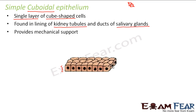Why are they present in kidney tubules and salivary glands? There has to be a reason. This kind of epithelium helps in absorption as well as secretion. When I talk of secretion, I am talking about salivary glands — the glands that secrete saliva. When I talk of absorption, you can think of kidney tubules, which help in absorption and transportation of substances filtered by the kidney. Since absorption and secretion are the two specialties of this epithelium, that is why they are present in kidney tubules and salivary glands.